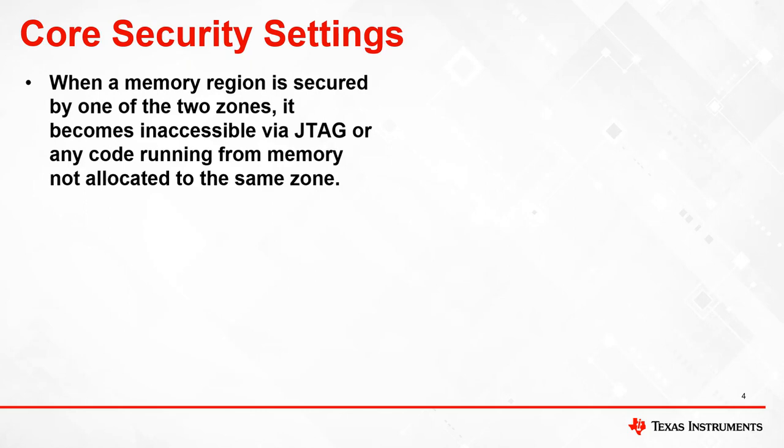The fundamental security feature provided by the DCSM module is configuring particular regions of memory as secure or unsecure. When a block of memory is secured by zone 1 or zone 2, data reads or writes by an unauthorized source such as JTAG or the CCS memory browser are blocked. If an unauthorized source attempts to read a secure memory location, the read returns all zeros, effectively blocking access to that memory.